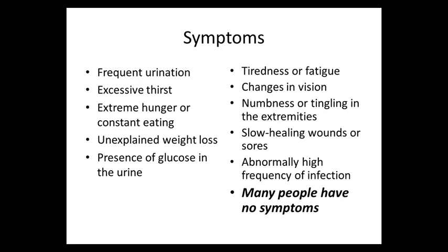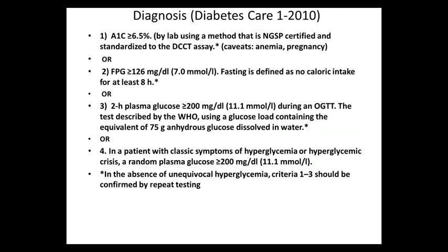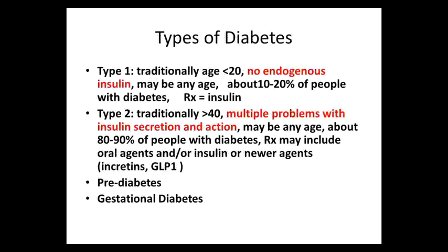Symptoms of diabetes include frequent urination, excessive thirst, weight loss especially with type 1, fatigue, blurred vision, and slow-healing cuts or sores — but often people have no symptoms, so screening is needed. For a formal diagnosis: a fasting sugar over 126, a random sugar over 200 with classic symptoms, or a hemoglobin A1C over 6.5% — which reflects average blood sugar over the past three months.